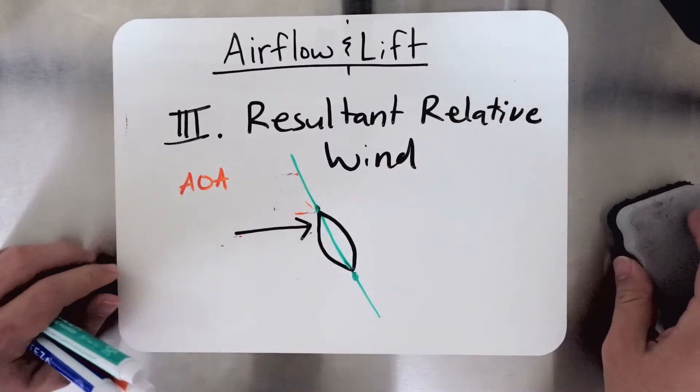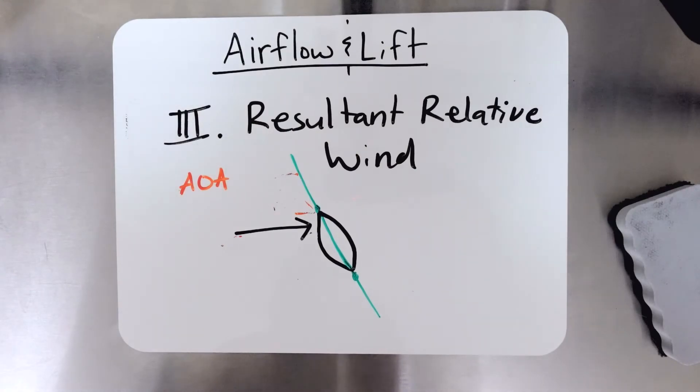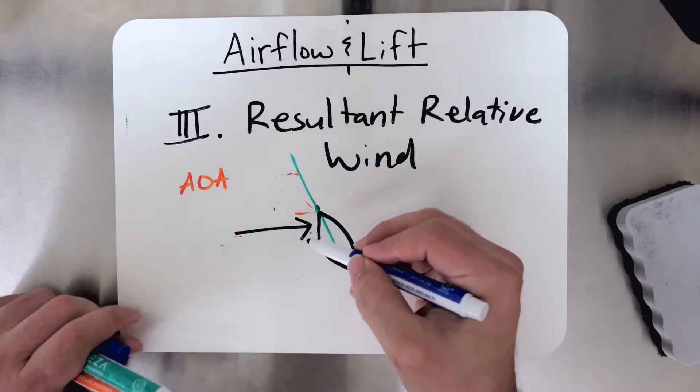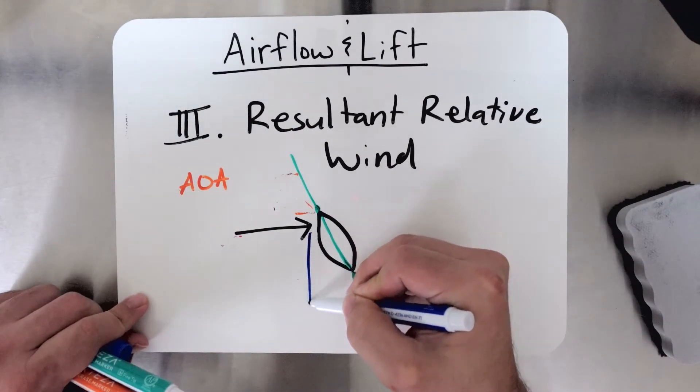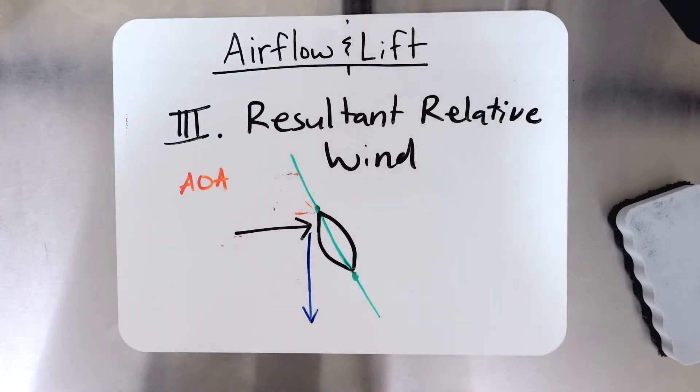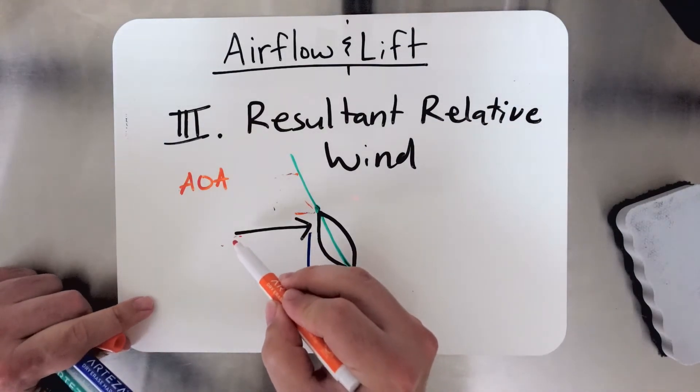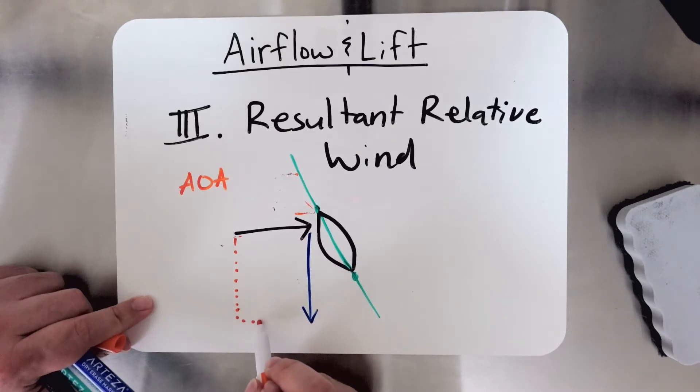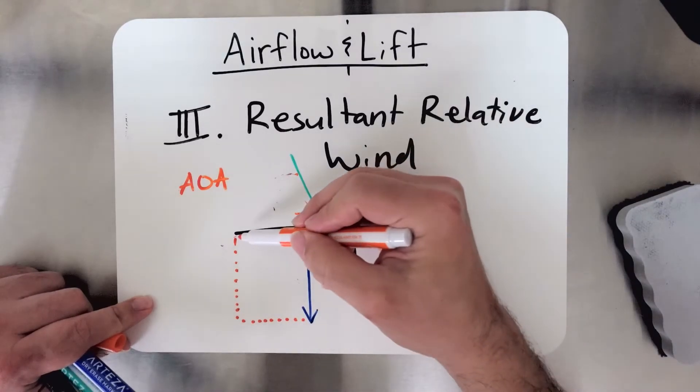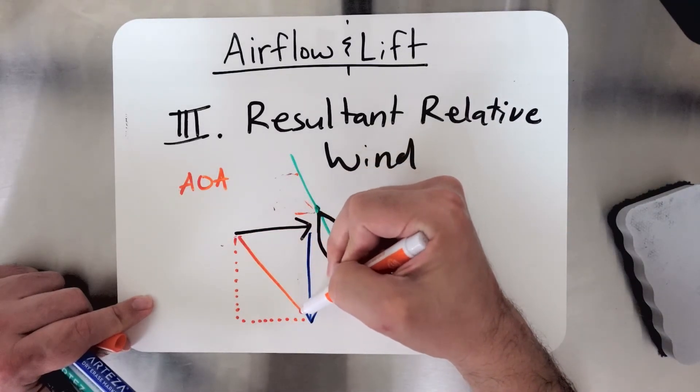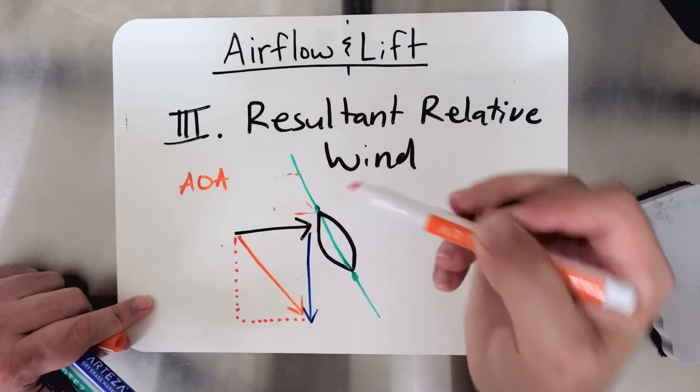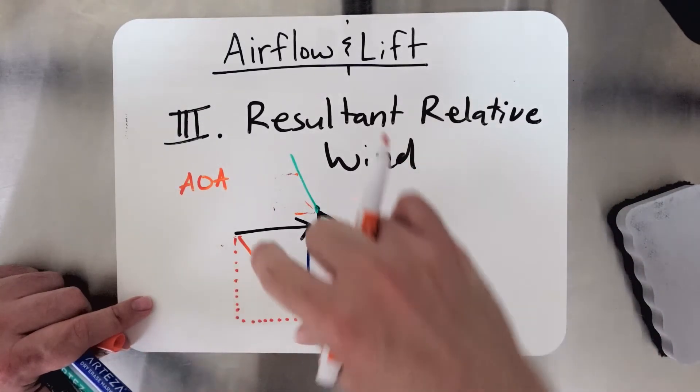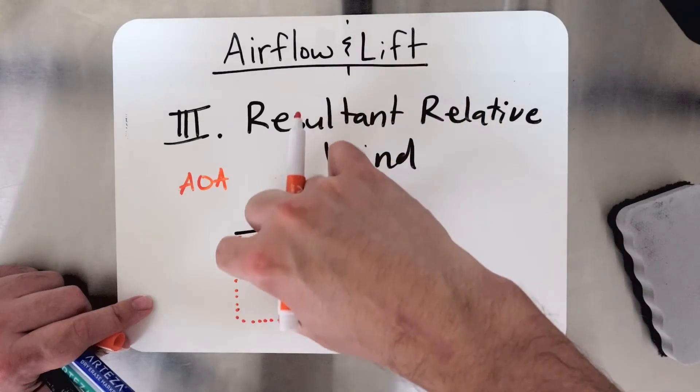And let's see what happens if we have a very large induced flow. So if you have a very large induced flow, we bring our orange pen back and draw our little box here so we can calculate the new resultant relative wind. We're going to get this vector, and this vector is much steeper than what we had before.